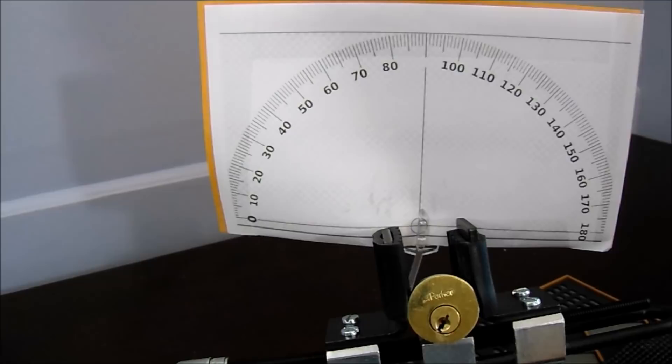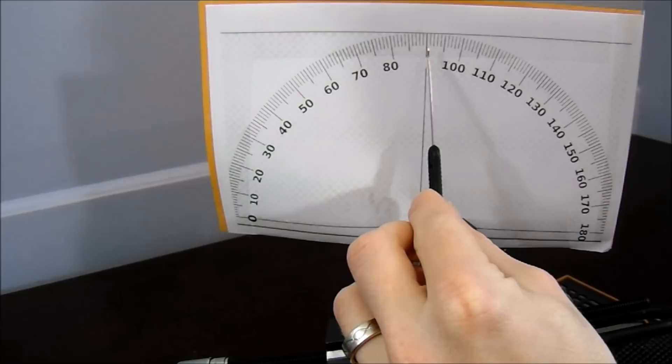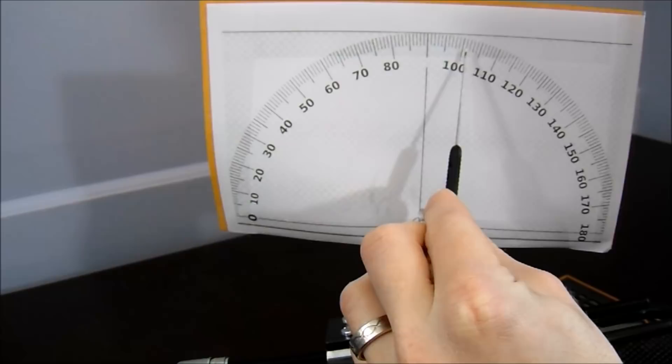So what we did is that we set all the standard pins and we started with the neutral zone right around 90 degrees. Once all the standard pins were set, the lock started to drop into a false set around 100 to 103 degrees.